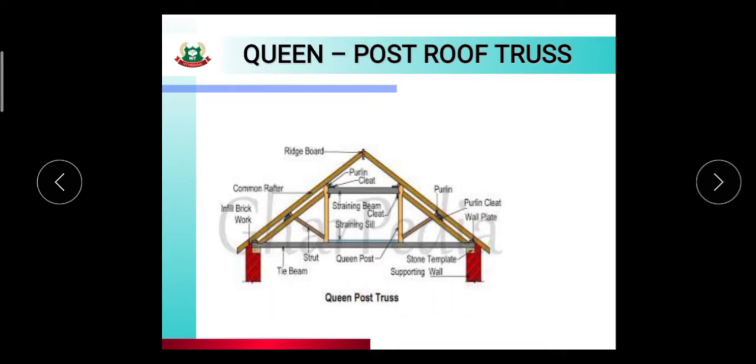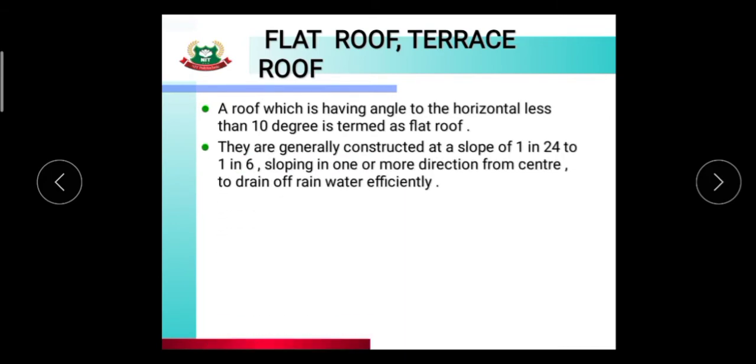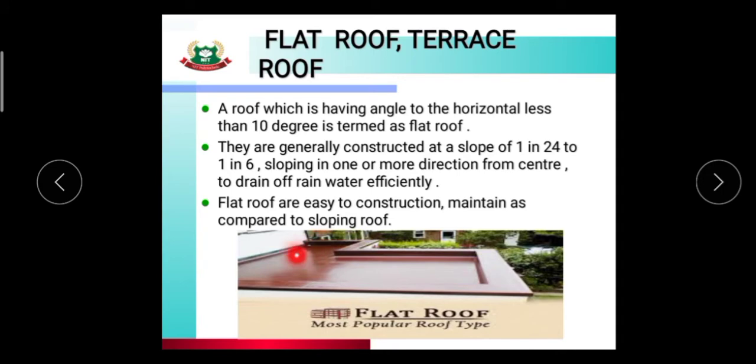Now flat roof and terrace roof. A roof which has an angle to the horizontal less than 10 degrees is termed as flat roof. They are generally constructed at a slope of one in 24 to one in 6, sloping in one or more direction from center to drain rainwater efficiently. Flat roofs are easy to construct and maintain as compared to sloping roofs. This type of roof is called a flat roof.